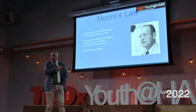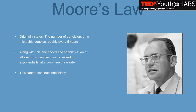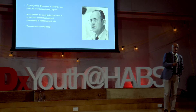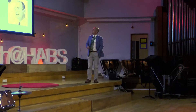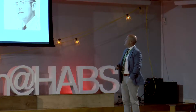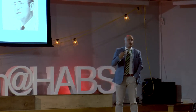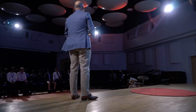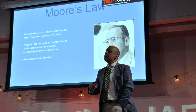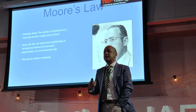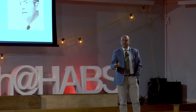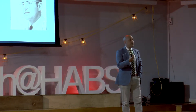Every talk about quantum computing starts with Moore's Law, and I didn't want to do that, and I ended up doing it. Moore's Law tells us that the number of transistors on a microchip doubles roughly every five years, and along with that, the speed and sophistication of computing at a commensurate rate. The problem is that this has driven so much of our economics, so much of our industry, and cannot continue indefinitely, because transistors are getting down to atomic scales. And a few hundred atoms of silicon does not behave like bulk silicon, the material.